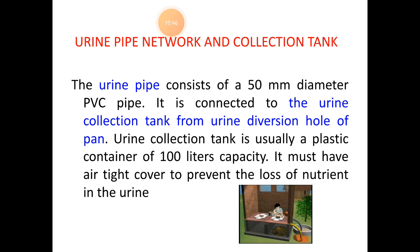The next part is the pipe network and collection tank. There are two collection tanks — one for urine and another one for feces — separately. Both wastes are collected separately in plastic containers of 100-liter capacity usually. We make use of plastic containers because they prevent the loss of nutrients.